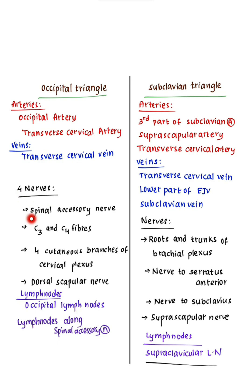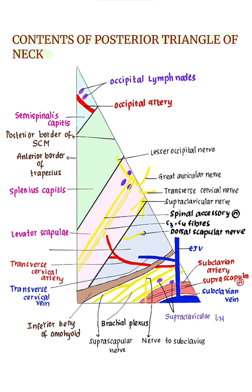Nerves — remember there are 4 nerves: spinal accessory nerve, C3 and C4 fibers, 4 cutaneous branches of the cervical plexus, and the dorsal scapular nerve.